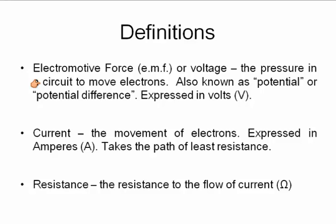Electromotive force or voltage is the pressure in the circuit to move electrons, which is known as potential or potential difference, expressed in volts. Current is the movement of electrons expressed in amperes. Current takes the path of lowest resistance, and resistance is the opposition to the flow of current expressed in ohms.